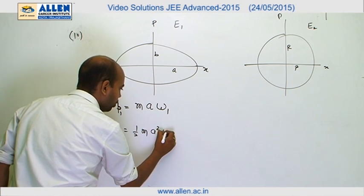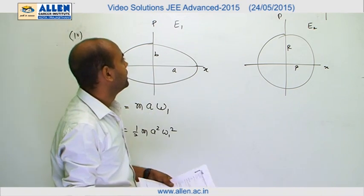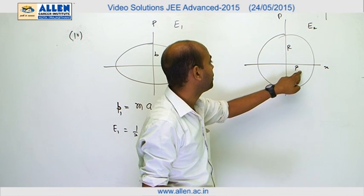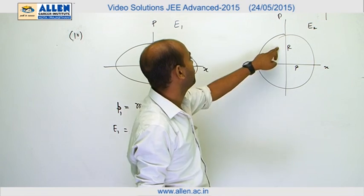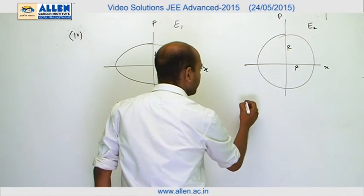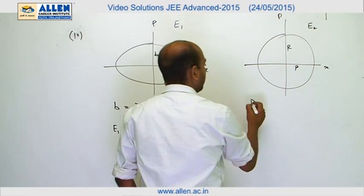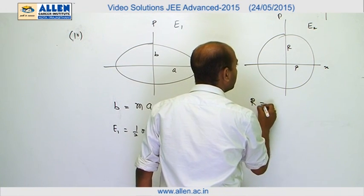For the second case, the amplitude is R and the maximum momentum is also R. So we can say R equals M omega 2 times R.